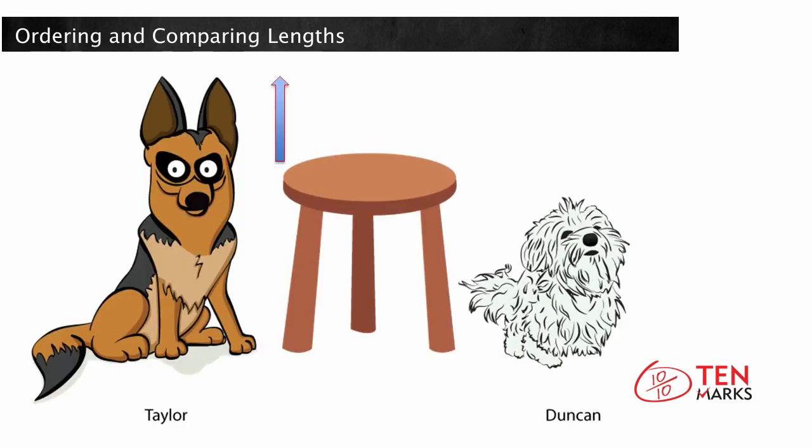Taylor, the German Shepherd, is taller than the stool. Duncan, the Maltese, is shorter than the stool. Who is shorter, Taylor or Duncan? Duncan.